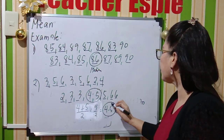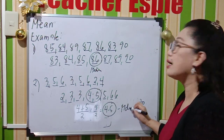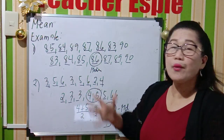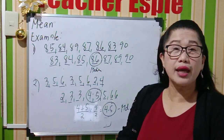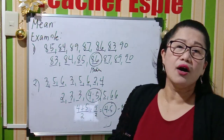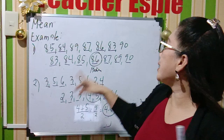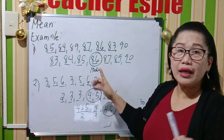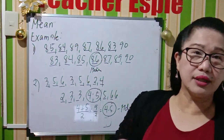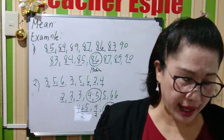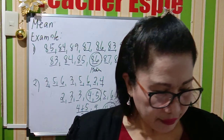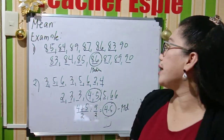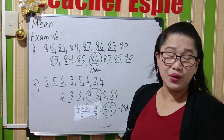So that is the process on how to get the median of the ungrouped data. If there is one middle value, that value is the median. If there are two middle values, you add the two and divide by 2.